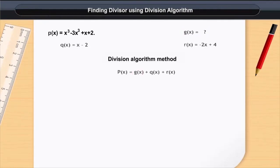So by division algorithm method we know that p(x) is equal to g(x) times q(x) plus r(x). Look at this carefully. We have p(x), r(x), q(x) and we need to find g(x).